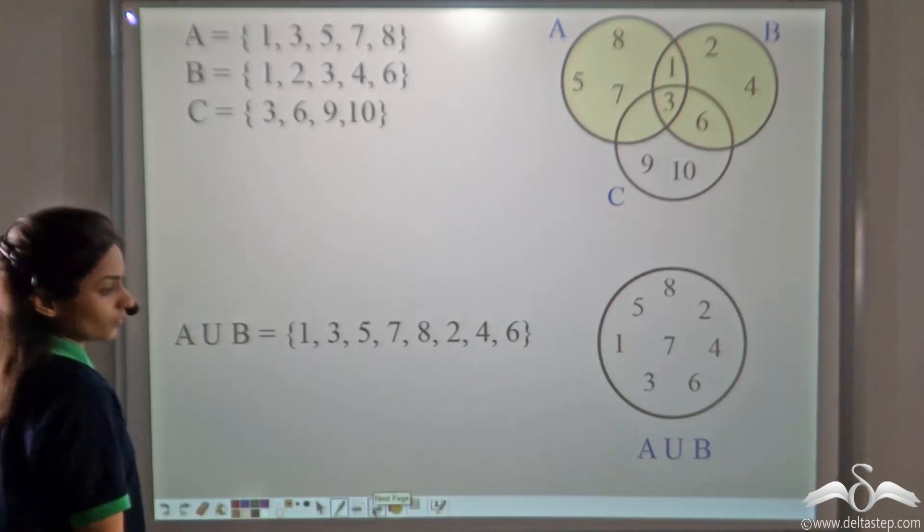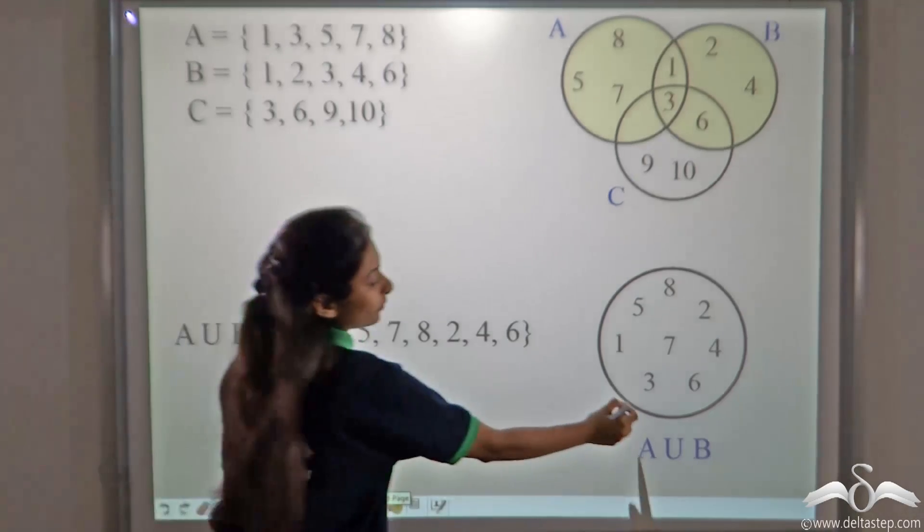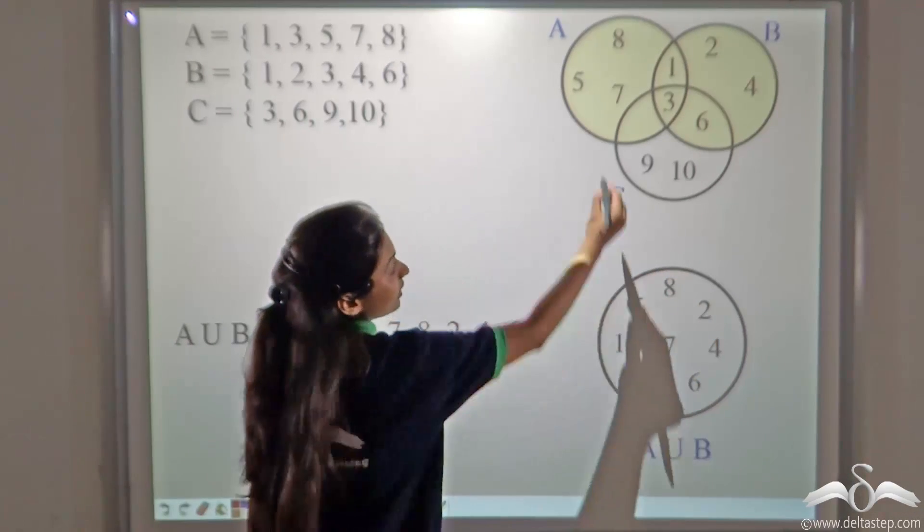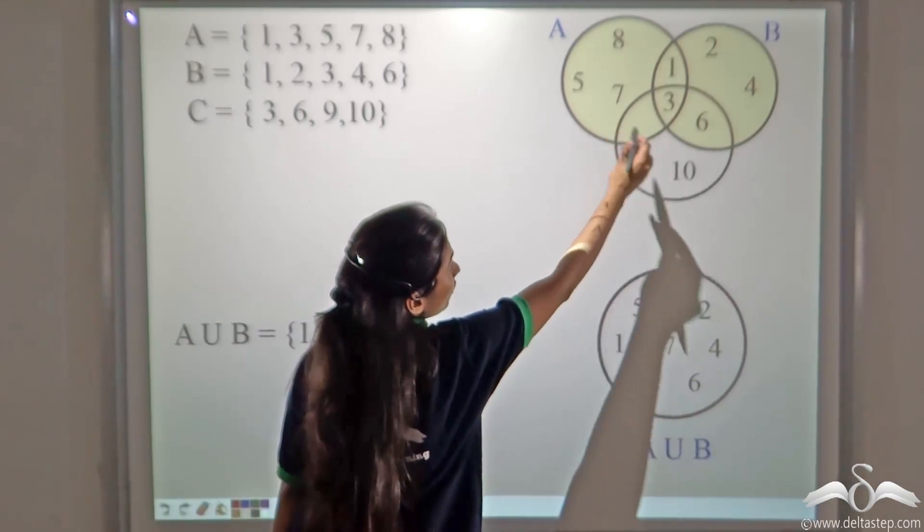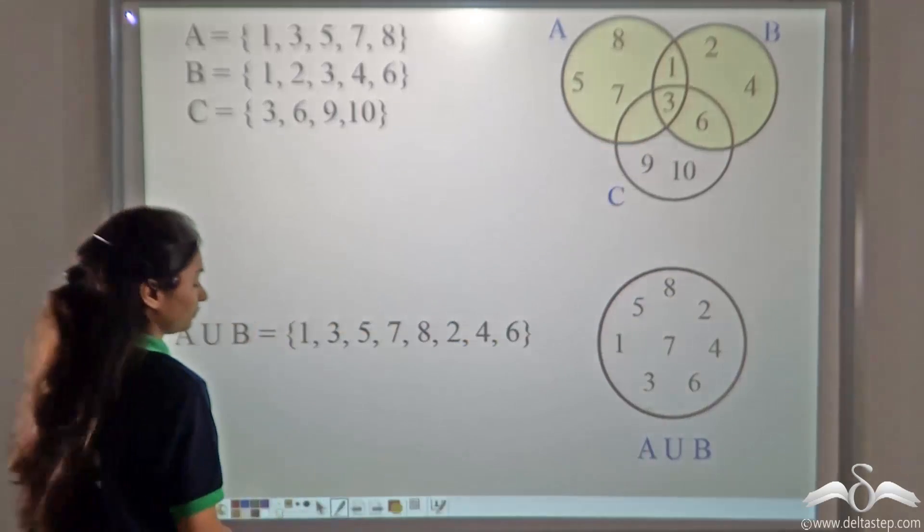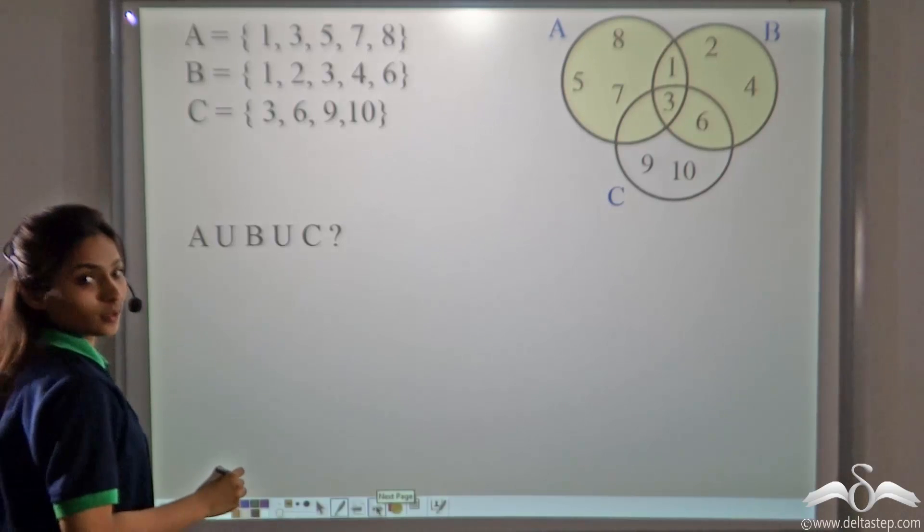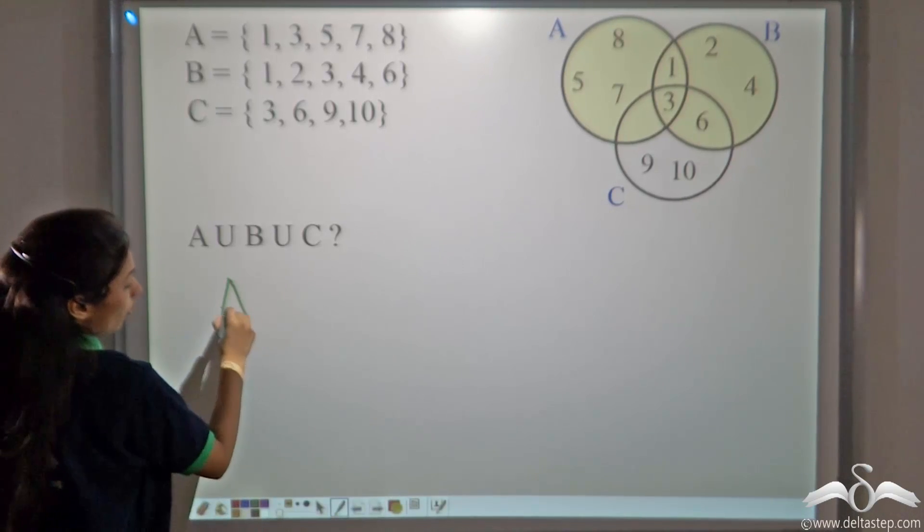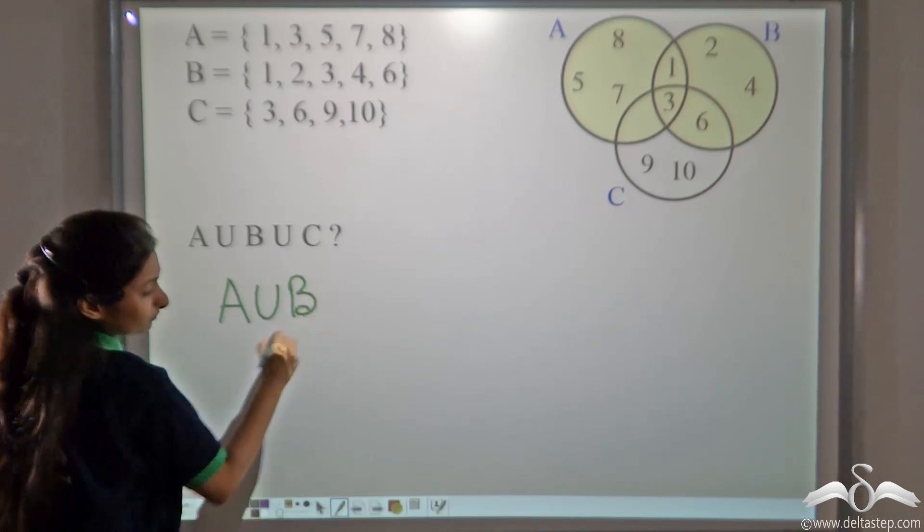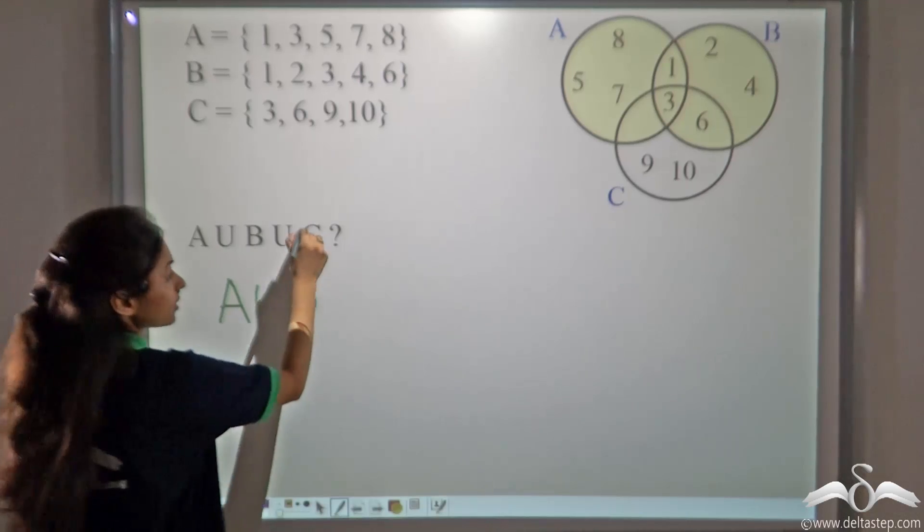We have A union B in a different set. The highlighted portion gives you A and B. Now, what about A union B union C? What we will do? We have already taken out A union B.